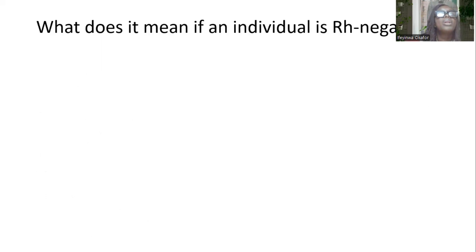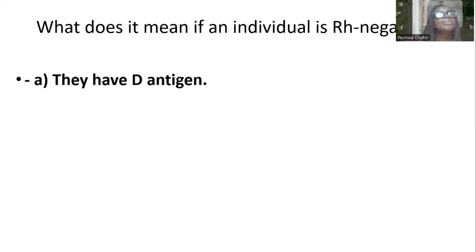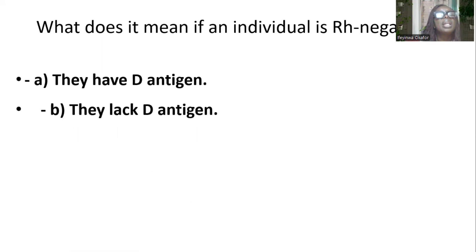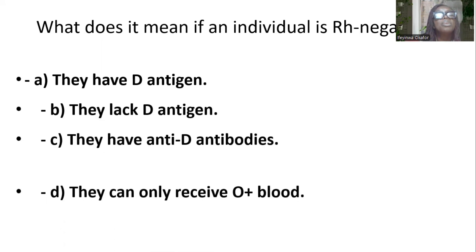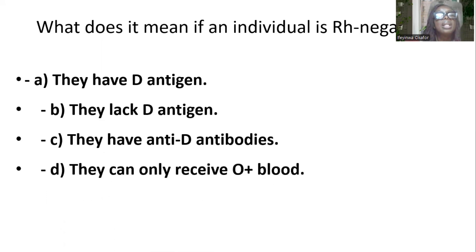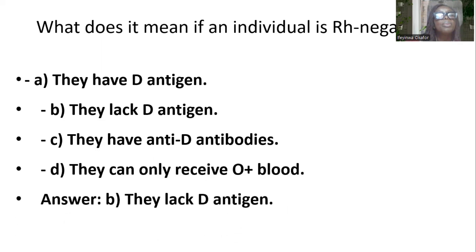What does it mean if an individual is RH-negative? Options include: they have D antigen; they lack D antigen; they have anti-D antibodies; they can only receive O-positive blood. And the answer is B — they lack the D antigen.